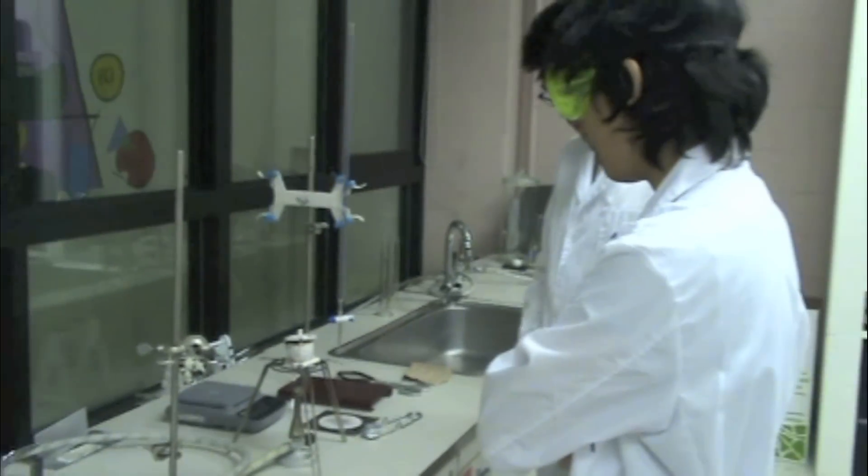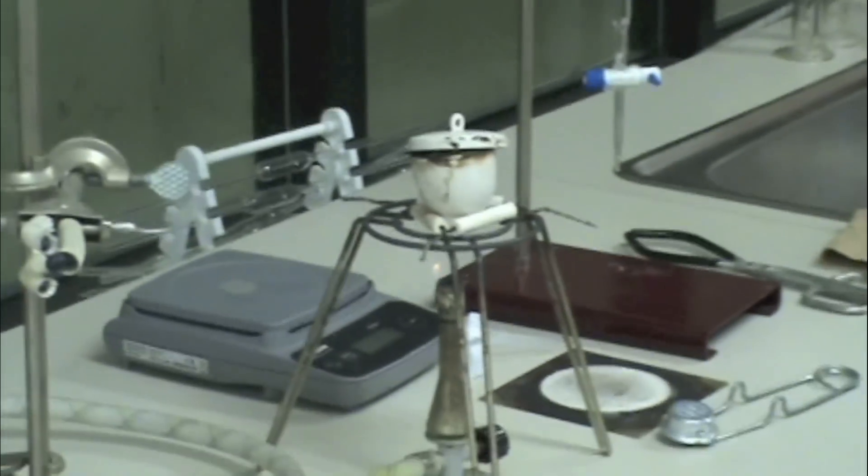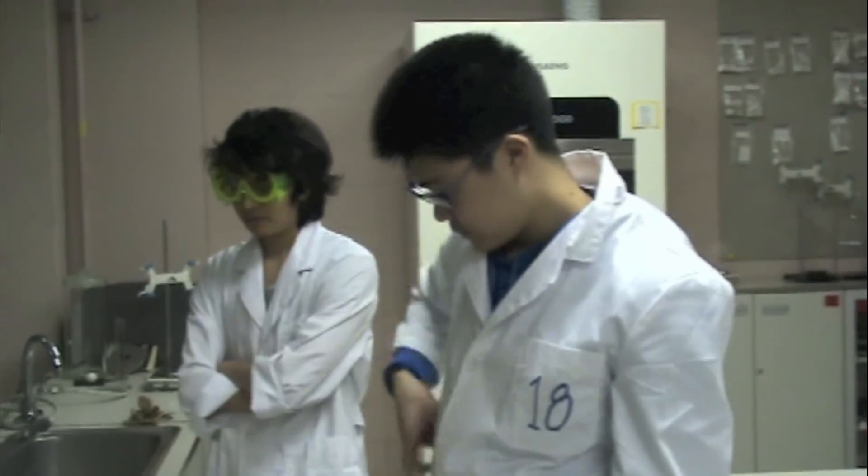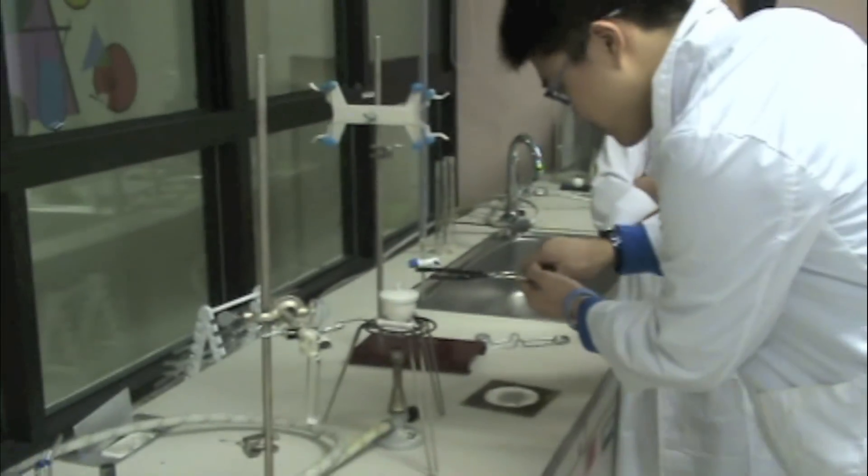So Billy, try to put the crucible on the wire gauze. No Billy, you can't grab hot crucibles with your bare hands. You need to use crucible tongs so that you don't get nasty burns on your fingers.